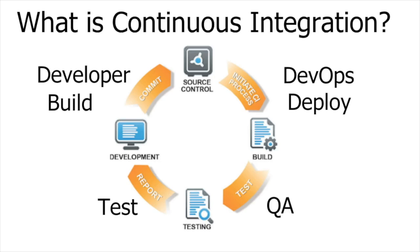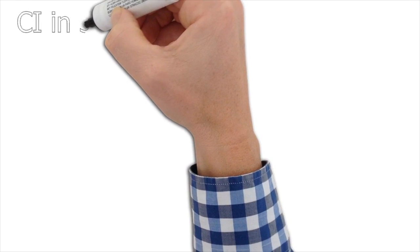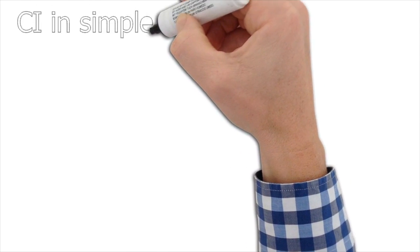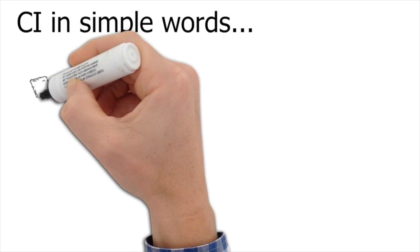Developers develop, commit the code, and the code is then taken to the source control where a DevOps system deploys the code and makes a build ready for testing. Testers test and report bugs to the developer, and the whole thing keeps on happening in a continuous iterative way — which is known as continuous integration.